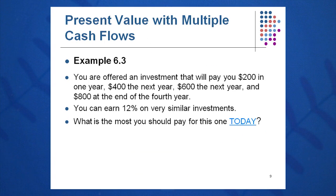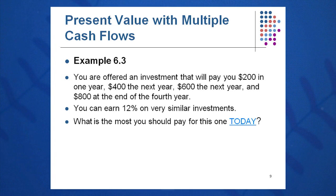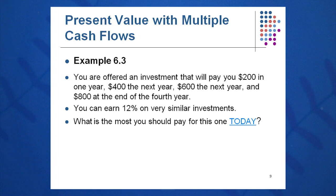Here's an example. You're offered an investment that will pay $200 at the end of year 1, $400 at the end of year 2, $600 at the end of year 3, and $800 at the end of year 4 — so $200, $400, $600, $800 on the timeline, with nothing in the bank today. You can earn 12% on similar investments. What is the most you should pay for this one today?